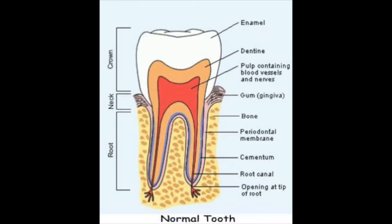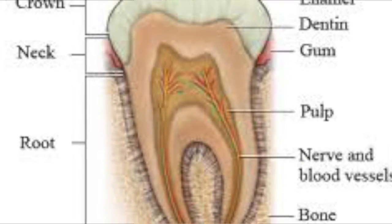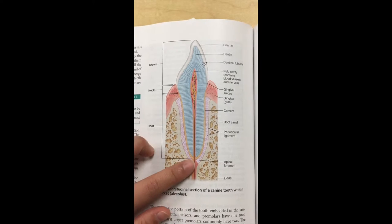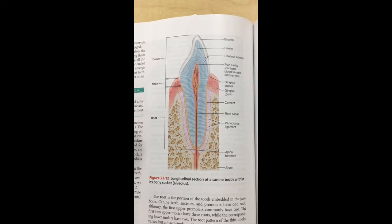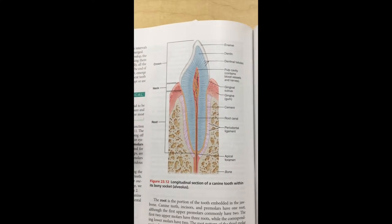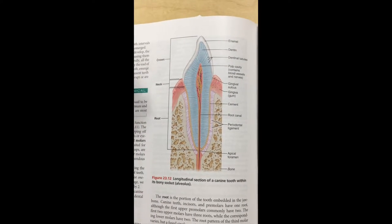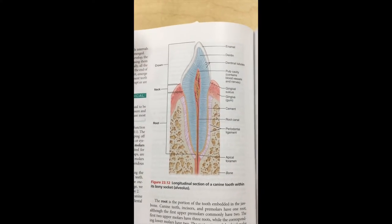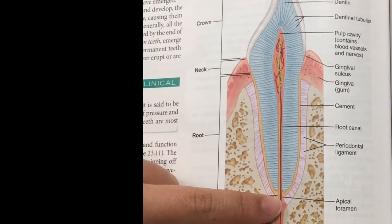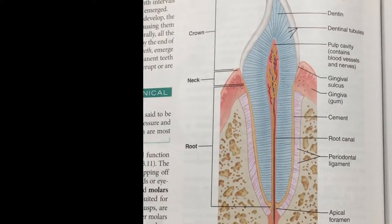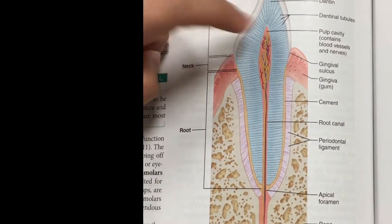The tooth is made up of the gingiva, which keeps your teeth in your bone — your gums. The actual tooth itself is made up of the crown, the neck, the root, the pulp cavity, the root canal, apical foramen, and the periodontal ligament. The crown is the part you see out of your mouth. The root is down in the bone. The pulp cavity is the space of blood vessels and nerves within your tooth, and the root canal is the passage from the pulp cavity to the apical foramen. The periodontal ligament anchors the tooth to the socket of your alveoli. Your tooth is made of enamel, dentin, cementum, and pulp.